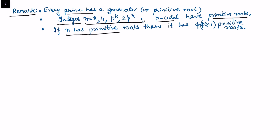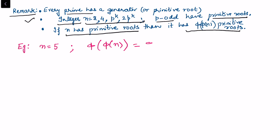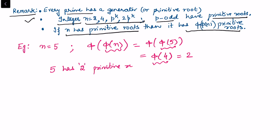In fact, an integer n = 2, 4, p^k, or 2p^k where p is odd will have a primitive root. If n has a primitive root, it has φ(φ(n)) primitive roots, where φ is the Euler totient function. For example, with n = 5: φ(5) = 4, then φ(4) = 2. So 5 has 2 primitive roots. One is g = 2, as shown earlier.